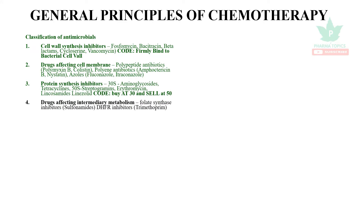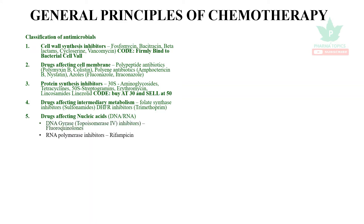Drugs affecting intermediary metabolism: folate synthesis inhibitors are sulfonamides, and dihydrofolate reductase inhibitors are trimethoprim. Drugs affecting nucleic acids — DNA gyrase inhibitors or topoisomerase inhibitors are fluoroquinolones; RNA polymerase inhibitors include anti-TB drugs such as rifampin. Drugs destroying DNA are metronidazole and nitrofurantoin. Drugs which are analogues of nucleotides or nucleosides, which are antivirals, include zidovudine, lamivudine, and acyclovir.